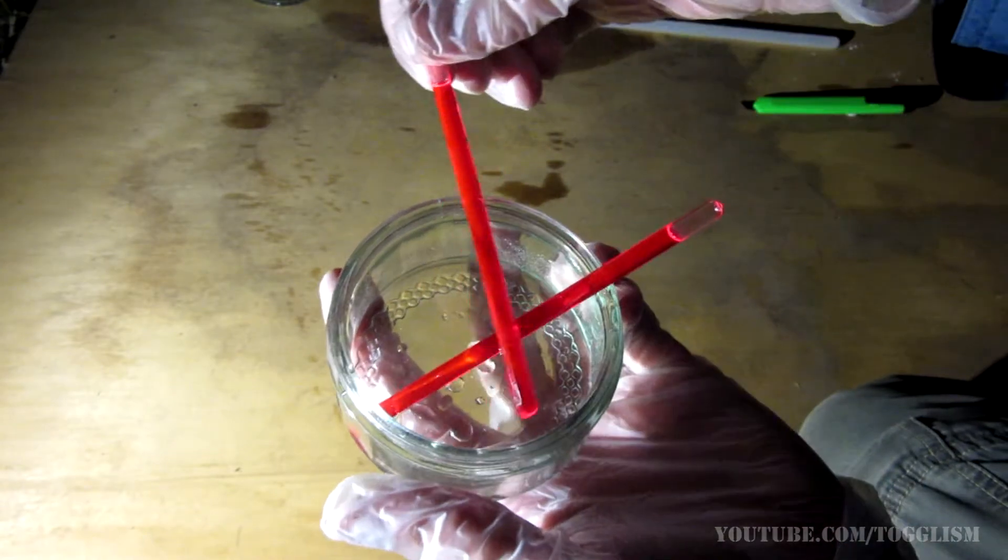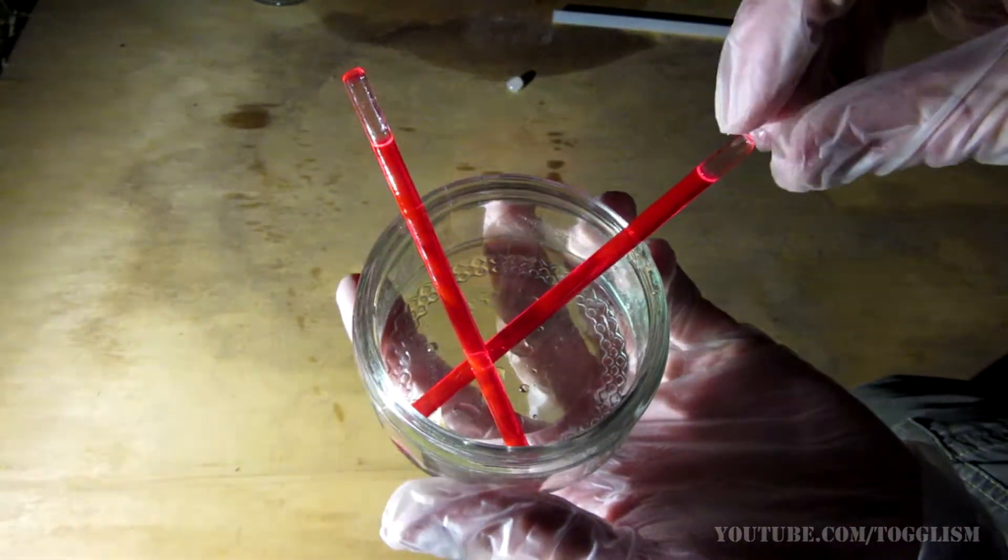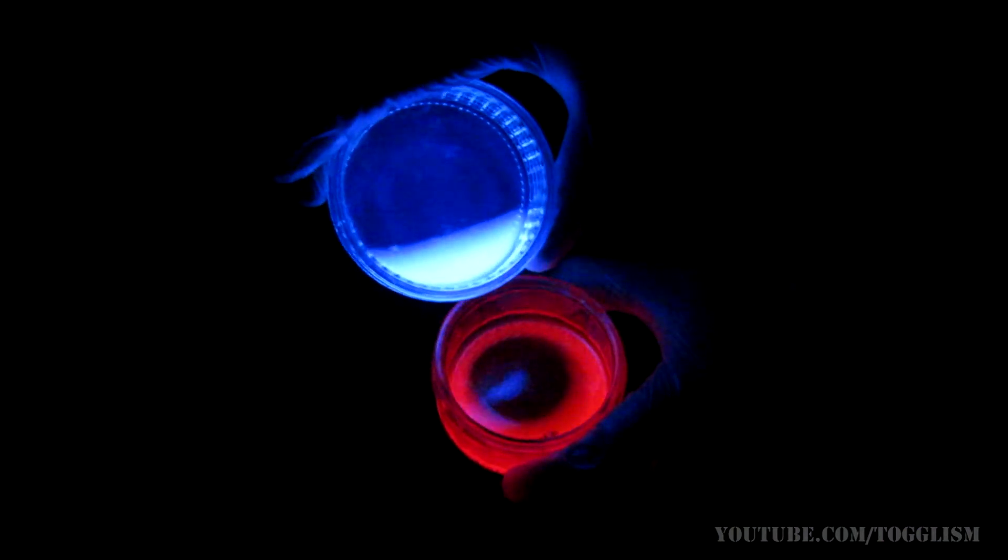Now we're going to be combining some of these glow sticks to see what colors they make. Here we have a really nice blood red and some beautiful neon blue. Let's mix them together.